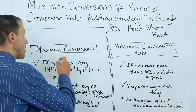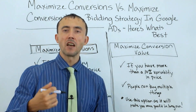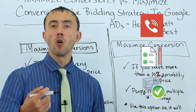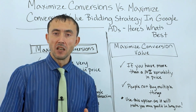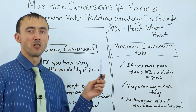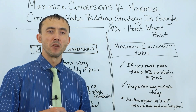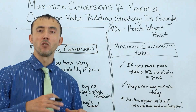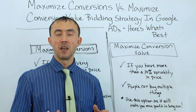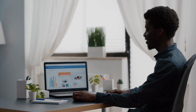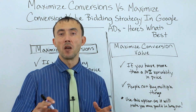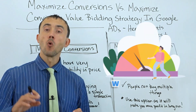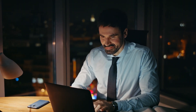Maximize conversions is set up to get you more conversions. That conversion could be a phone call, a form fill, or an order through the shopping cart. Typically e-commerce businesses are not going to use maximize conversions bidding strategy because they're dealing with shopping cart purchases. If you're doing lead generation campaigns, you should be tracking whether those leads turn into a sale, or at least if the leads are qualified, scoring the lead, and then importing that information back into the ad account.